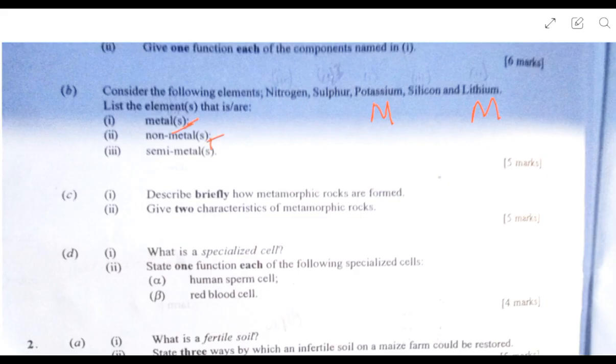Then nonmetals. Nonmetals you have nitrogen and sulfur. Then semi-metal: silicon is a semi-metal. So you have two metals and one semi-metal.